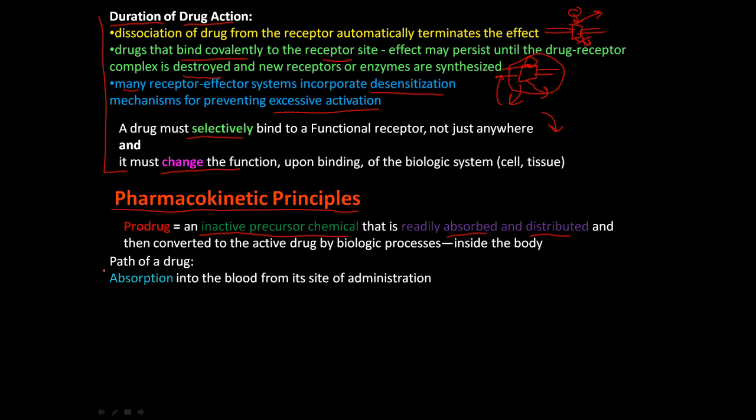So what is the path of the drug? First of all, the drug needs to go through absorption into the blood from the site of administration. So it can be IV, it can be IM intramuscular, it can be IV through the venous system injected into the veins. It can be a shot in the butt, for example, intramuscular or in the arm.